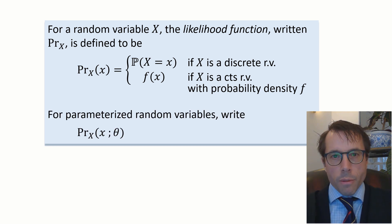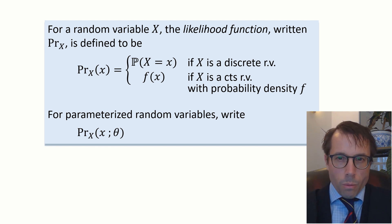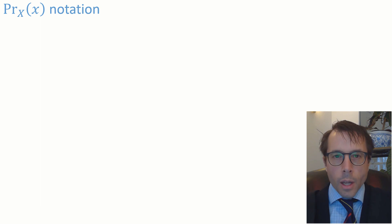If the random variable takes parameters, I like to write it with a semicolon, because here the outcome little x and the parameter theta are playing two completely separate roles. And often when it's not interesting, I'll just omit the parameters, the stuff after the semicolon, just to save time.